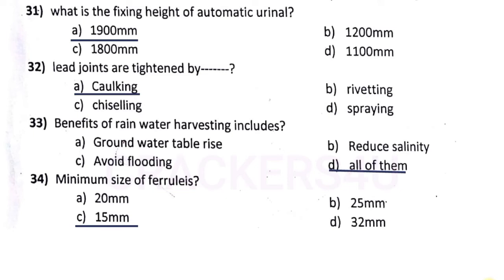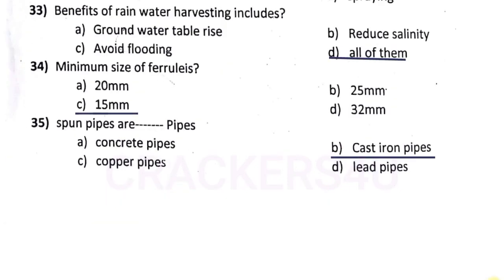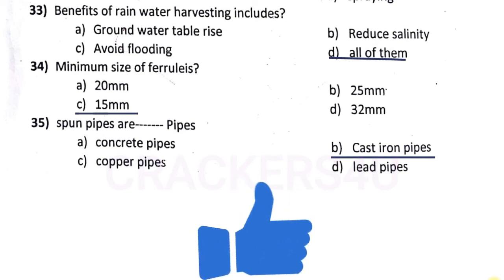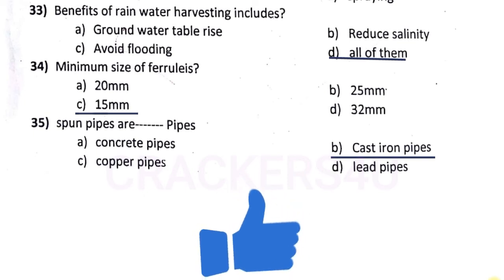Question number thirty-three: spun pipes are — answer option B, cast iron pipes.